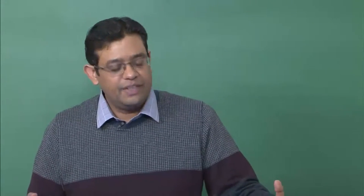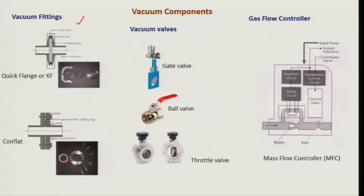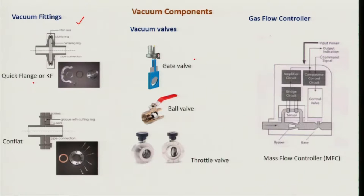Apart from pumps, there are several other components that are part of a vacuum system, such as vacuum fittings, which should be leak-proof — for example quick-flange or conflat fittings. Vacuum valves allow you to control pressure pneumatically, by computer, or manually. When you need to flow a pure gas into the system, you can use a mass flow controller to introduce the gas at a controlled rate. These are all part of a vacuum system.